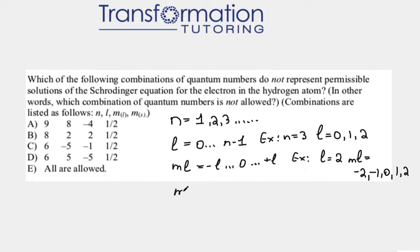And the final quantum number is the spin number, ms. And basically this one is very simple. It could be plus 1 half or minus 1 half. And now that we are familiar with the rules, let's go ahead and look at all of the set of possible numbers to see which set cannot happen.